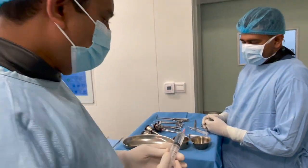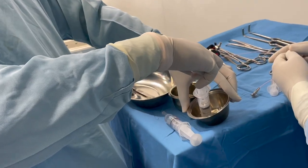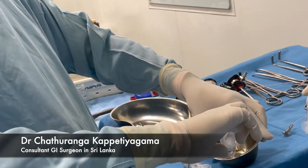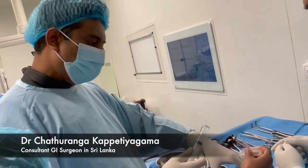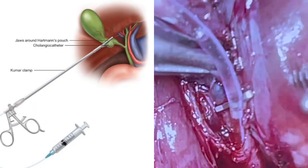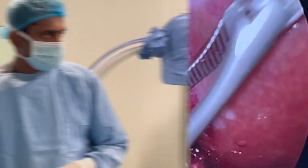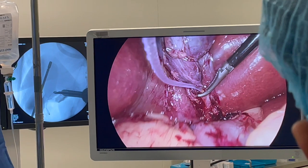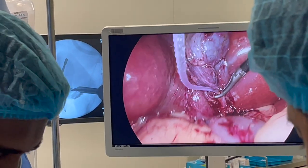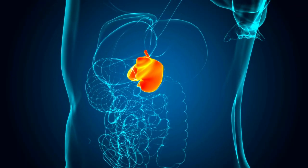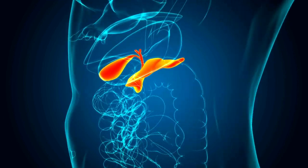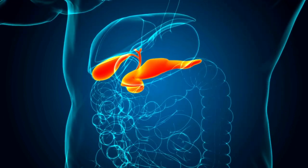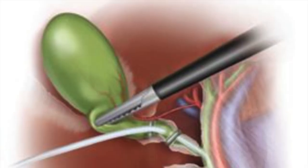The gallbladder and bile ducts play a crucial role in the digestion and transportation of bile, which helps break down fats in our diet. Therefore, it is essential to ensure their proper functioning. Once you are under anesthesia and in the operating room, a small tube called a catheter is inserted into a duct that connects to your bile duct system. A special contrast dye is then injected through the catheter into the ducts, helping highlight the bile ducts on x-ray images, allowing the surgeon to evaluate their structure and detect any abnormalities.